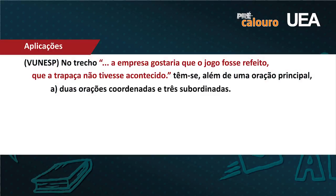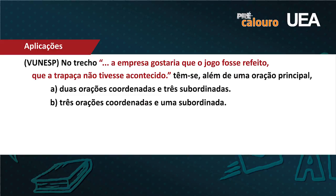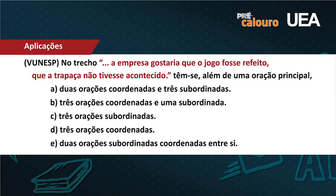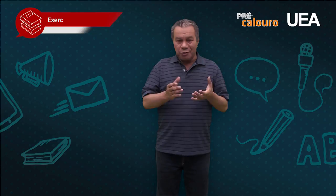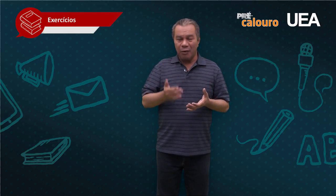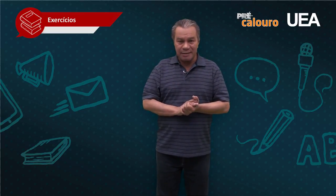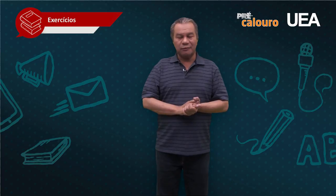Letra A: duas orações coordenadas e três subordinadas — bem ruim. Letra B: três orações coordenadas e uma subordinada — não dá certo. Letra C: três orações subordinadas — não, porque o total é três e uma delas tem que ser principal. Letra D: três orações coordenadas — também não funciona. E na letra E: duas orações subordinadas, coordenadas entre si. Por eliminação, você jogou fora quatro alternativas e ficou com a que interessa, porque você tem base para fazer a leitura morfossintática.